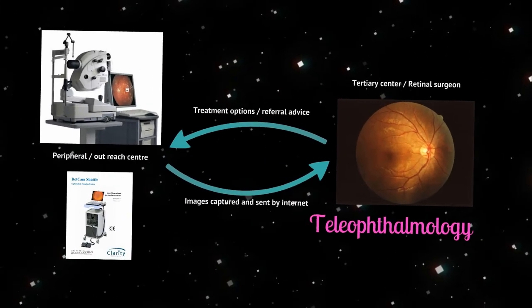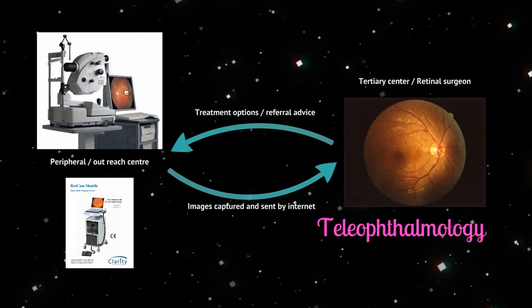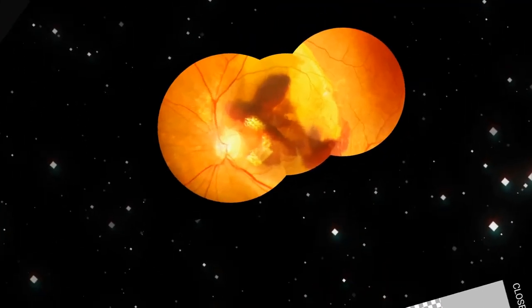These qualities make it an ideal device for teleophthalmology. In teleophthalmology, images and clinical data are transmitted over a secured connection from the peripheral or outreach center to a tertiary center, where the specialist ophthalmologist interprets the images and correlates them with the clinical data. They then arrive at a diagnosis and advise the consultant at the peripheral center on management options. Smartphones can make teleophthalmology cost-effective.